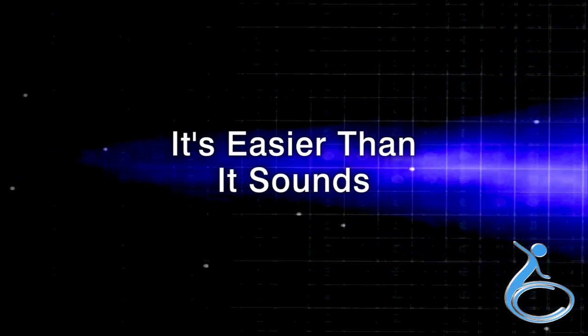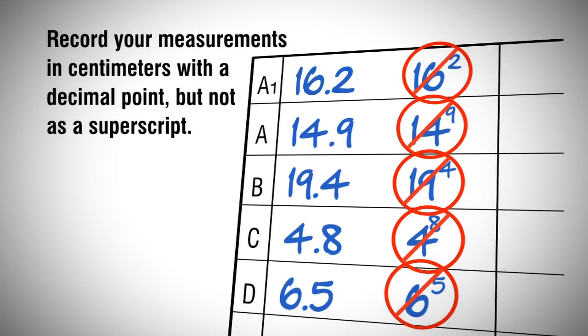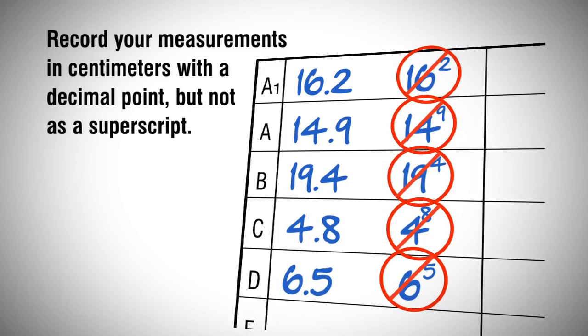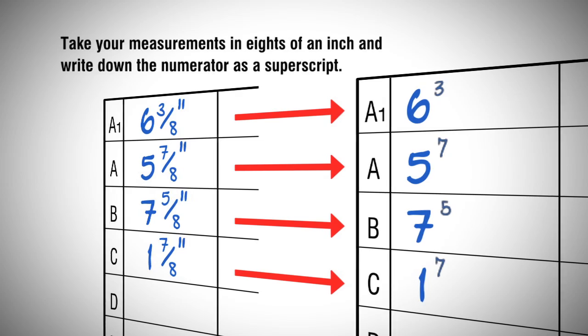It's easier than it sounds. Just record your measurements in centimeters with a decimal point, but not as a superscript. Take your measurements in eighths of an inch and write down the numerator as a superscript.